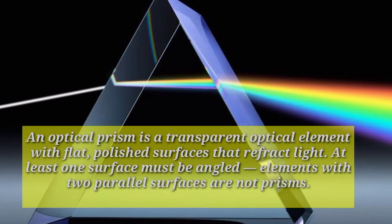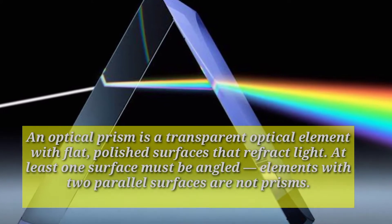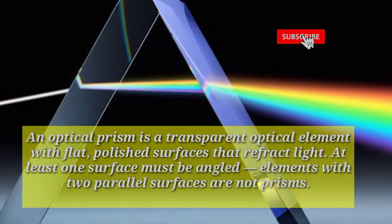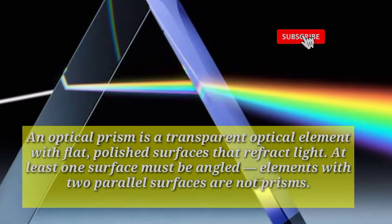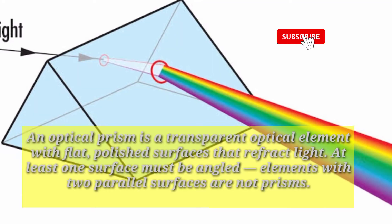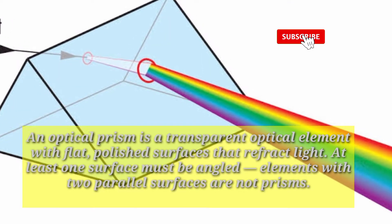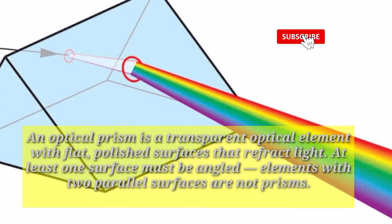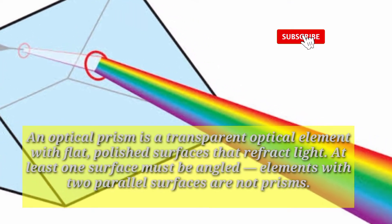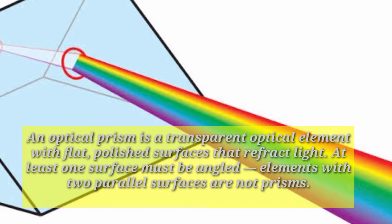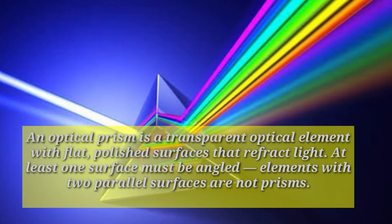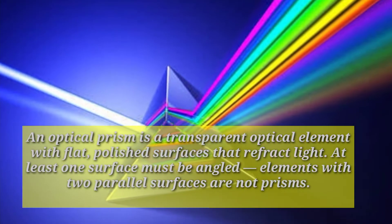An optical prism is a transparent optical element with flat, polished surfaces that refract light. At least one surface must be angled — elements with two parallel surfaces are not prisms.